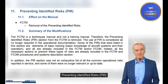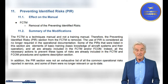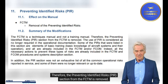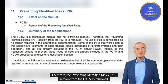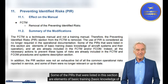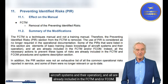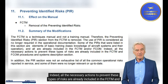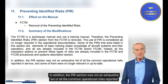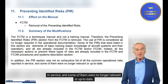Preventing Identified Risks (PIR). Effect on the Manual FCTM. Removal of the Preventing Identified Risks section. Summary of the Modifications: The FCTM is a Techniques Manual and not a Training Manual. Therefore, the PIR section from the FCTM is removed. The use of PIR is considered no longer required in the operational documentation. Some of the PIRs were elements of basic training and basic knowledge of aircraft systems, and all are already included in the FCTM and/or FCOM. All necessary actions to prevent these risks are already included in the FCTM and FCOM procedures and systems description section. In addition, the PIR section was not an exhaustive list of all common operational risks, and some were no longer relevant or up-to-date.